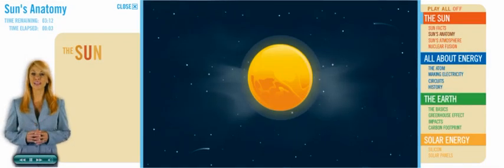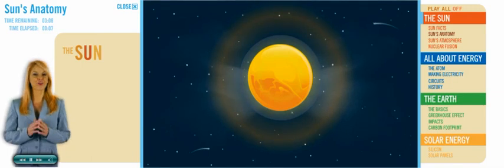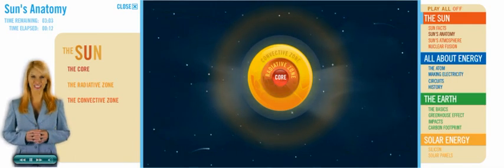Each part of the Sun plays a special role in how it creates light and heat. There are three main parts of the Sun: the core, the radiative zone, and the convective zone.